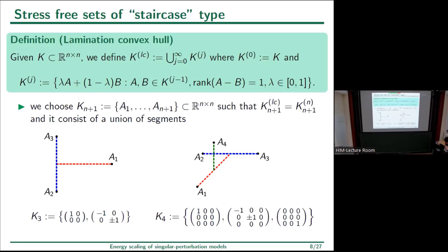Our staircase sets in n dimensions consist of m+1 matrices, characterized by the fact that the lamination convex hull reaches up to order n and is essentially one-dimensional, consisting of a union of segments. In 2D, with three matrices, the blue lines are first-order laminates and the red lines are second-order laminates. To construct K^4 we add one dimension and one matrix, and we iteratively build staircase sets by adding one dimension and one matrix each time.